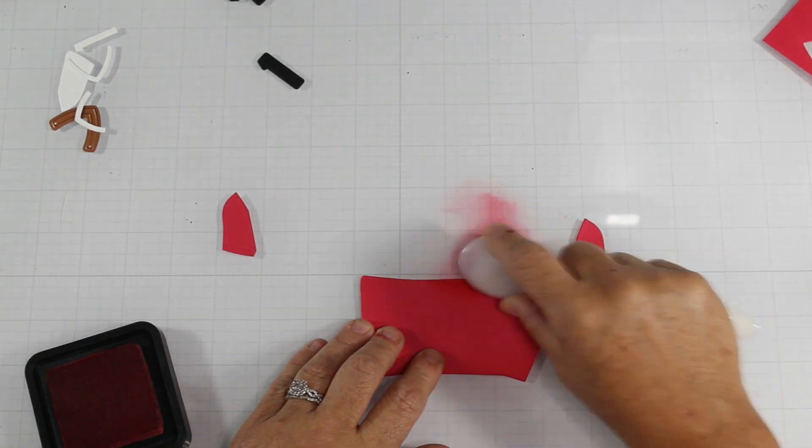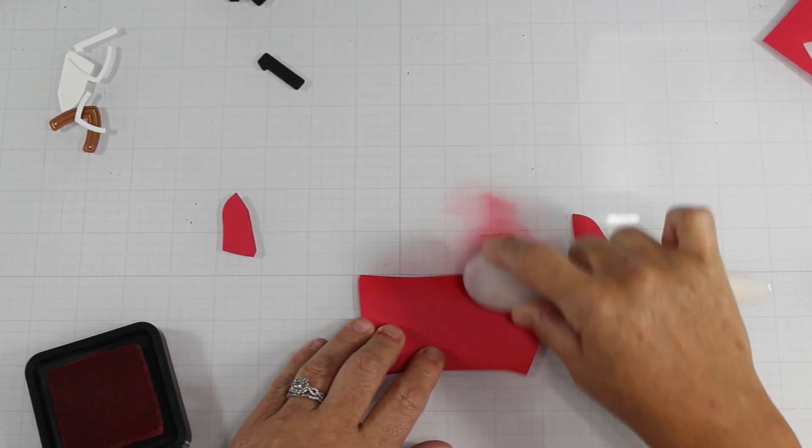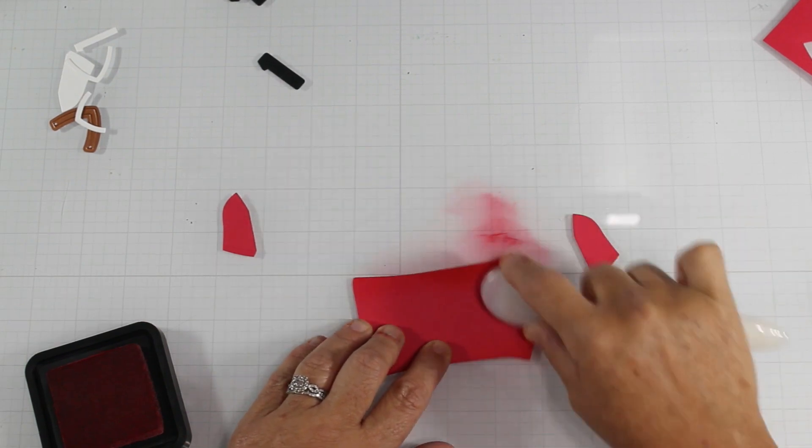Here, I thought I would add some dimension to my red jersey and use some Candy Apple Distress Ink to add some dimension.